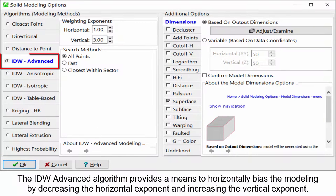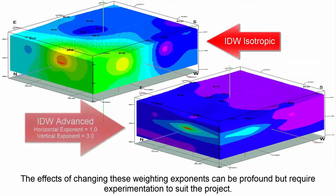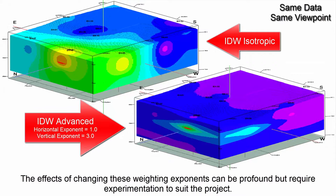The IDW advanced algorithm provides a means to horizontally bias the modeling by decreasing the horizontal exponent and increasing the vertical exponent. The effects of changing these weighting exponents can be profound but require experimentation to suit the project.